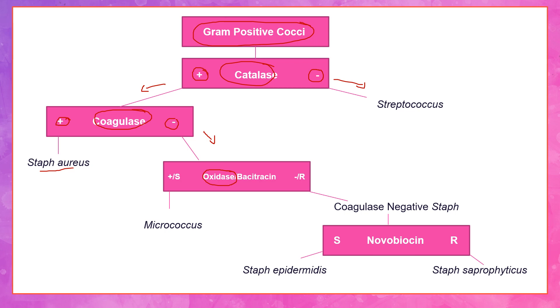In this case, if we have a gram-positive cocci that's catalase positive, coagulase negative, and positive for the oxidase test, it's a micrococcus. If we have a gram-positive cocci that is catalase positive, coagulase negative, and negative with the oxidase test, we continue on this flowchart and test it with Novobiocin, which is a specific type of antibiotic. Bacitracin is an antibiotic as well.